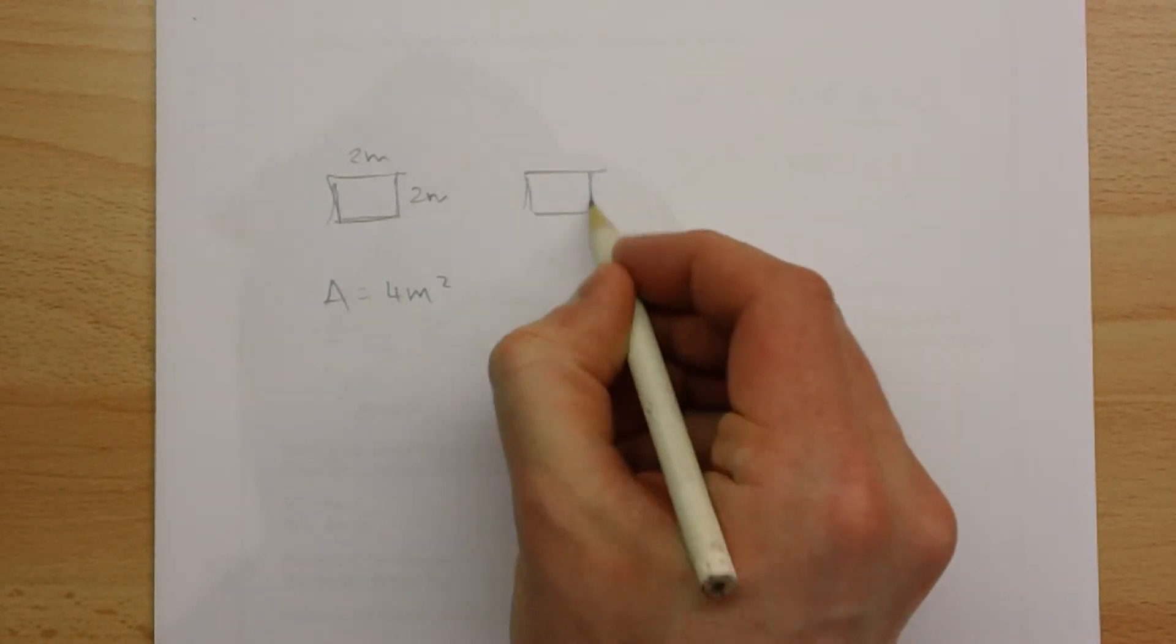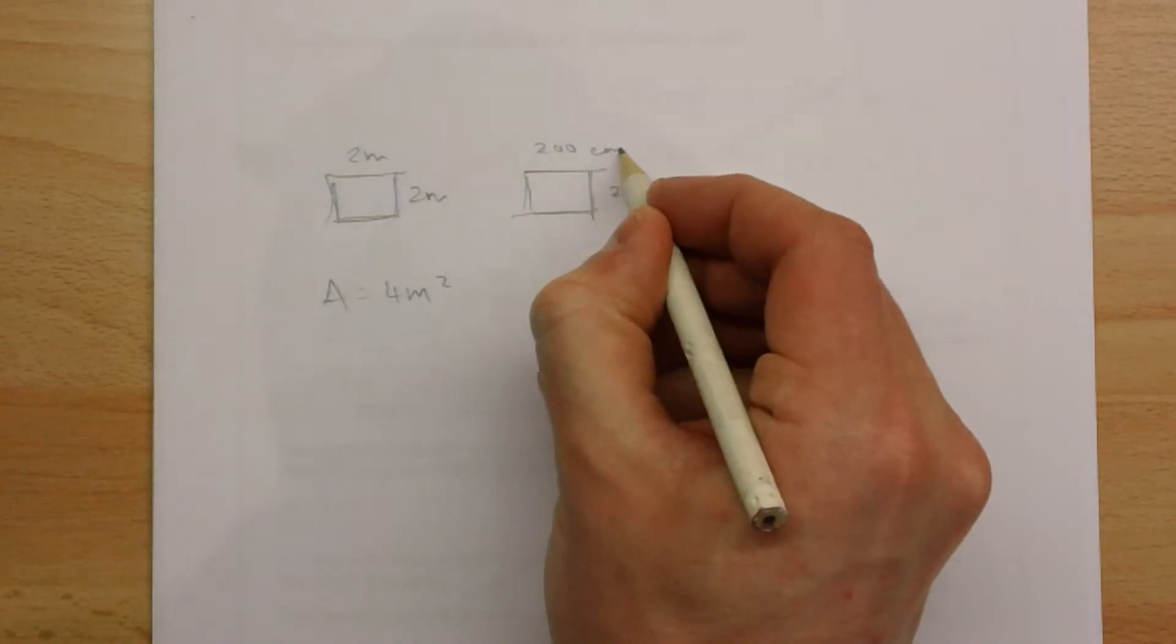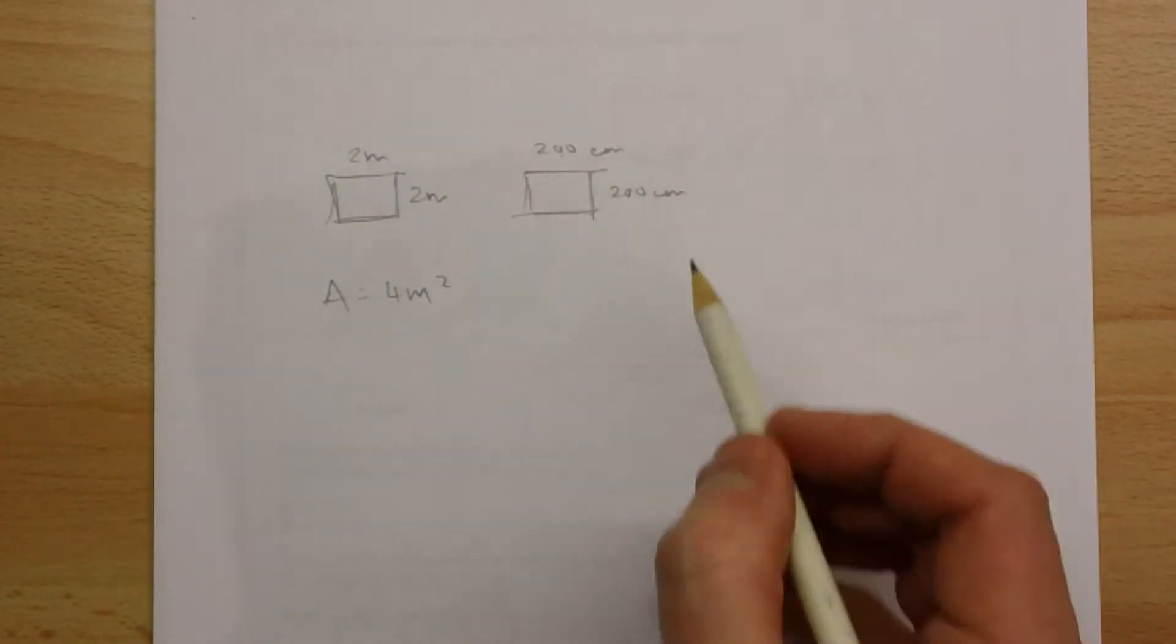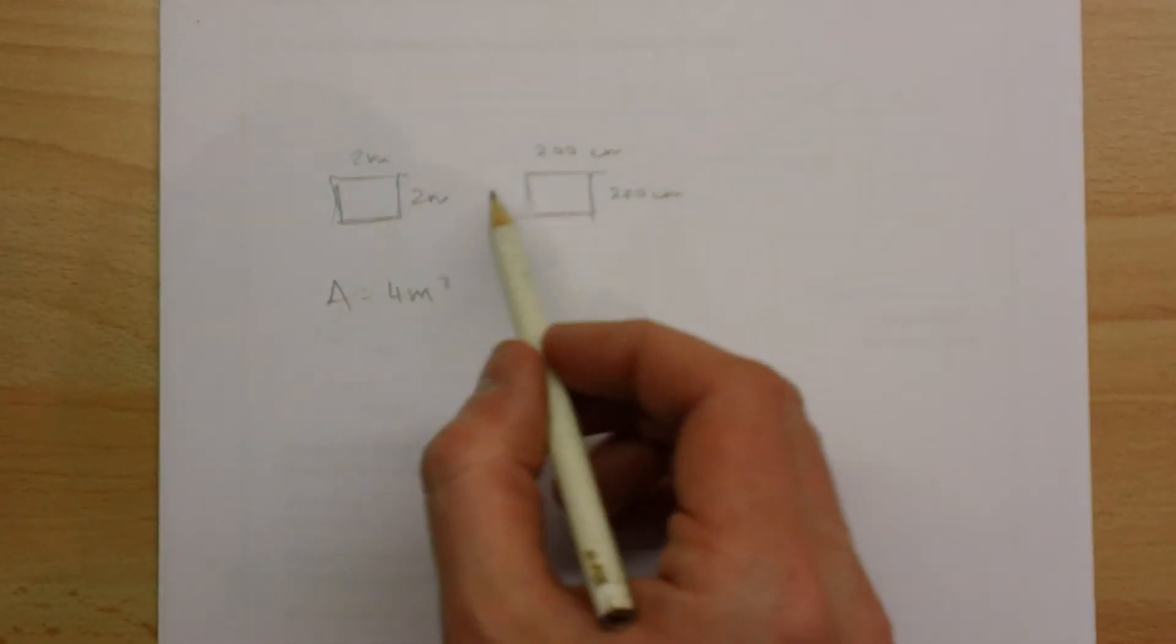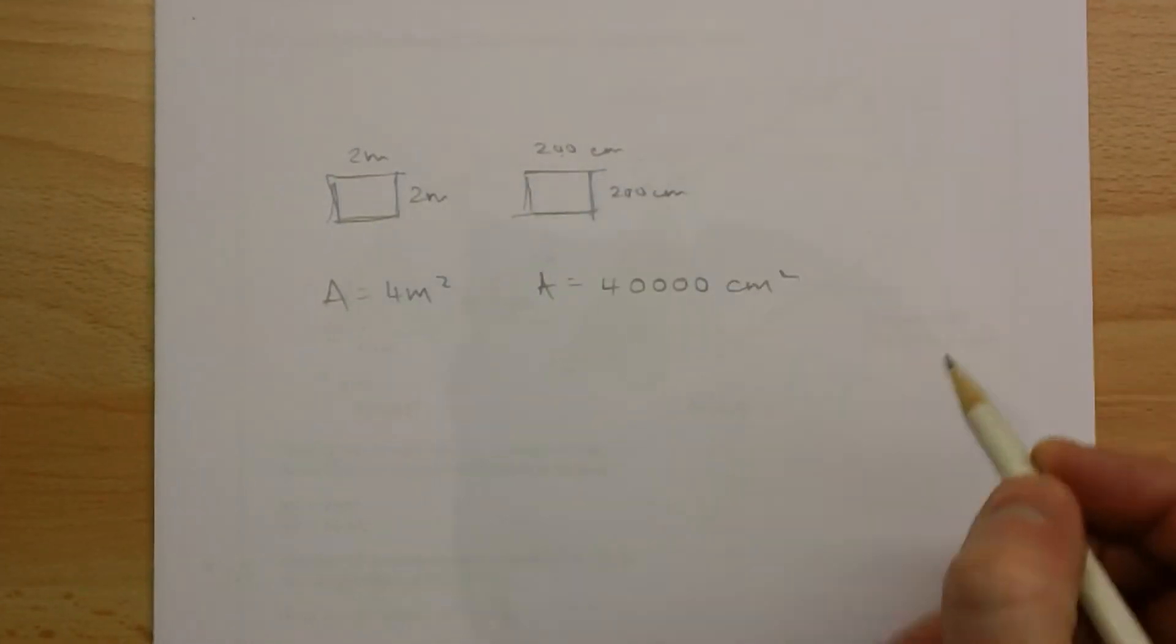Here's the same square but I'm going to label it in centimeters instead, and we all know that 2 meters and 200 centimeters are the same, so therefore this is the same size square. The area of this is 200 times 200 which is 40,000 centimeters squared.